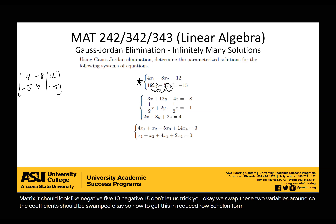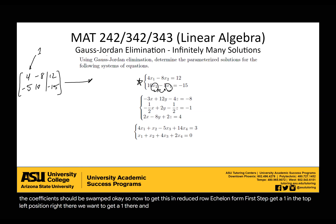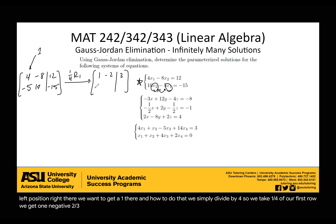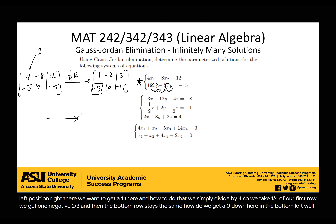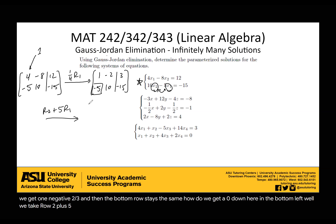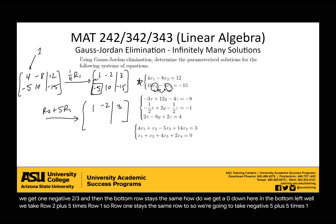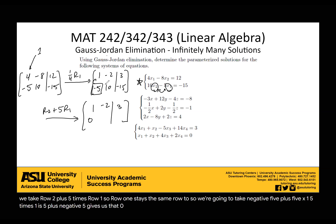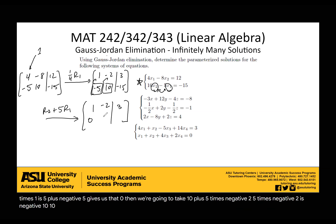To get this in reduced row echelon form, the first step is to get a 1 in the top left position. We simply divide by 4, so we take one-fourth of our first row and get 1, negative 2, 3, and the bottom row stays the same. Now to get a 0 in the bottom left, we take row 2 plus 5 times row 1. So negative 5 plus 5 times 1 gives us 0; 10 plus 5 times negative 2 gives us 0; negative 15 plus 5 times 3 gives us 0.